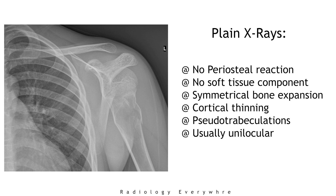Simple bone cysts expand the bone symmetrically and cause thinning of the cortex without any breach unless there is a pathological fracture. You can see prominent ridges of bone that appear as pseudotrabeculation on x-ray, but these are usually unilocular. Rarely, they can be truly multiloculated, which usually occurs after repeated fractures.